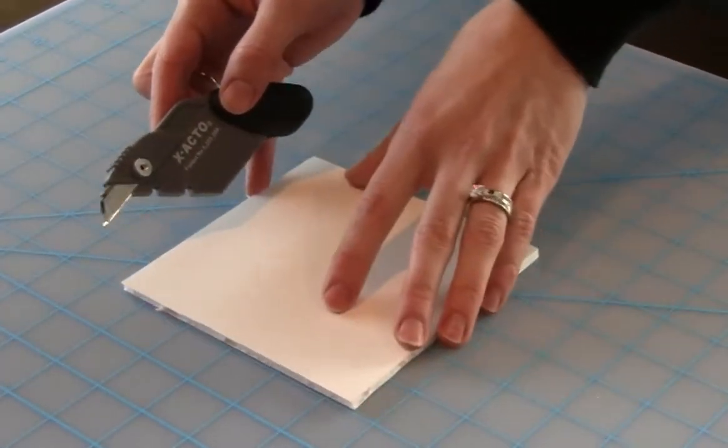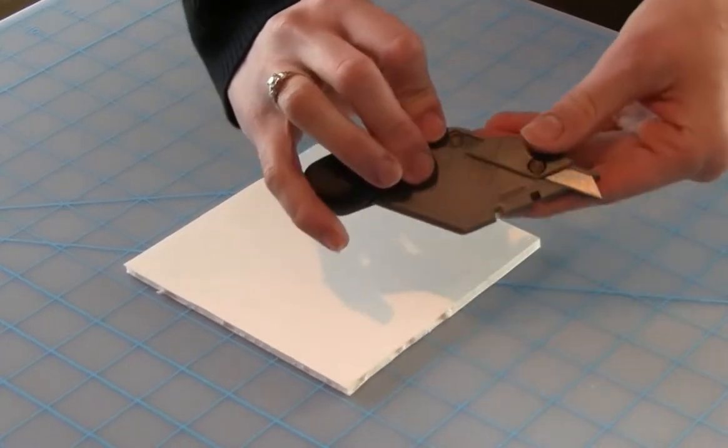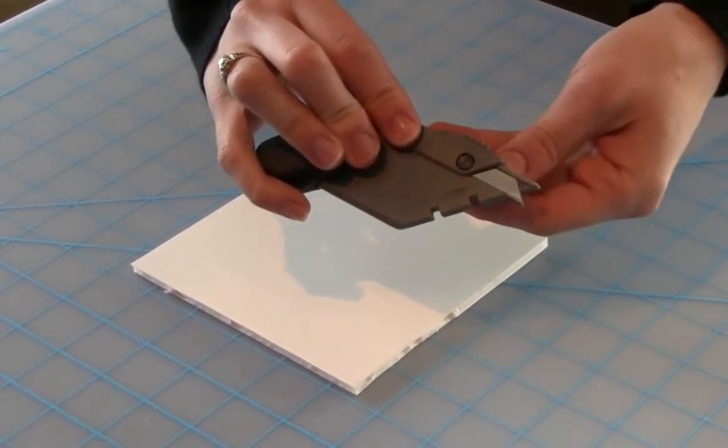To cut foam board using a channel method, move the blade depth selection to the midpoint to allow for a cut through the first layer of paper and the foam layer.